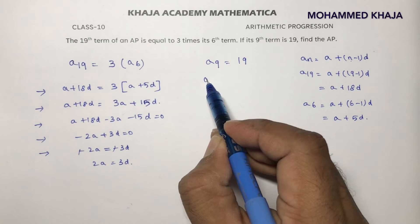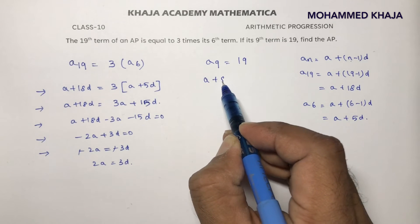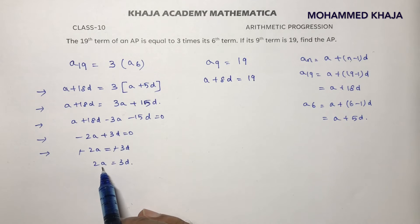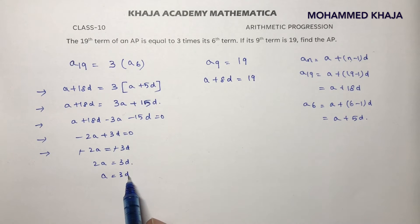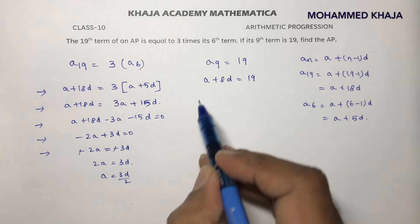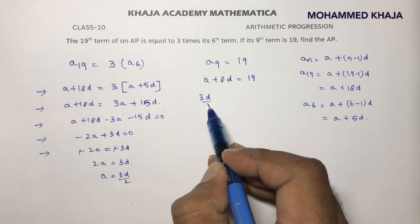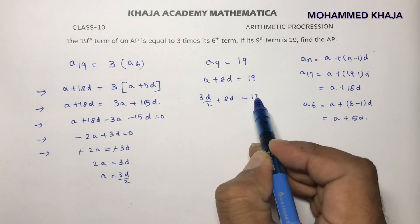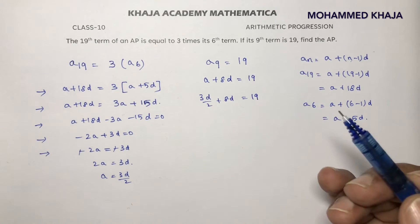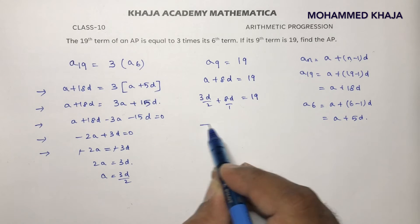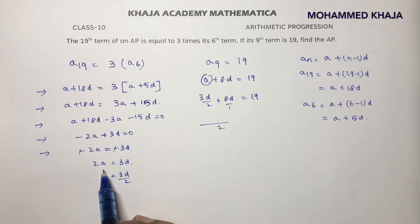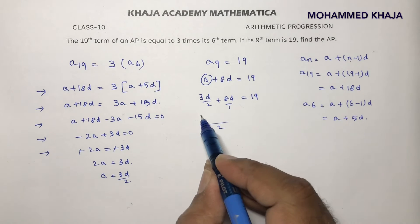They gave A9: A plus 8D equals 19. So here, if we substitute the value of A — A is 3D by 2 — in place of A, I will write 3D by 2 plus 8D equals 19. Here the LCM is 2, and in place of A I substitute the value 3D by 2.